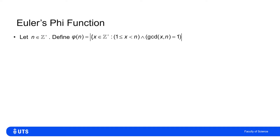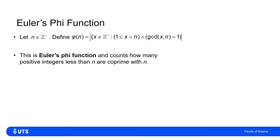We start with picking a positive integer n, and defining phi of n to be the cardinality, or the size of the set of positive integers x, such that x is at least 1 but less than n, and the greatest common divisor of x and n is 1 — so x and n are co-prime. This is Euler's phi function, and it counts how many positive integers less than n, for a given positive integer n, are co-prime with n.